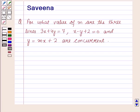Hello and welcome to the session. In this session we will discuss a question which says: for what value of m are the three lines 3x + 4y = 7, x - y + 2 = 0, and y = mx + 2 concurrent?